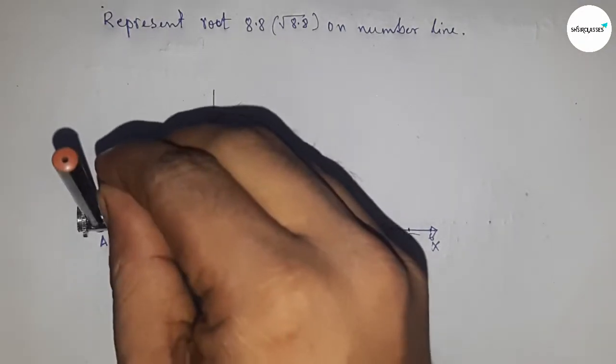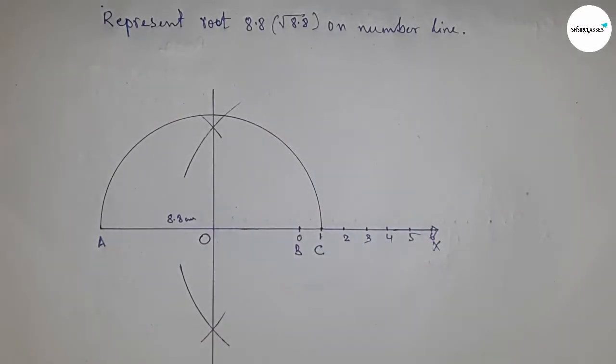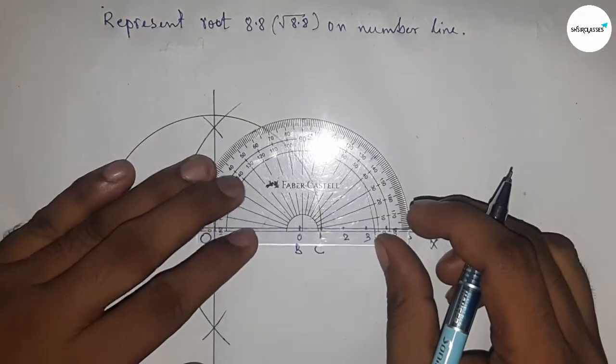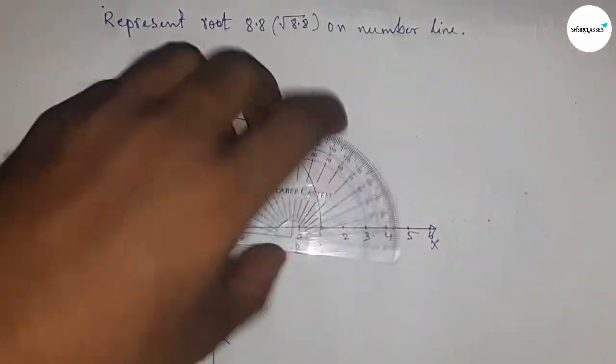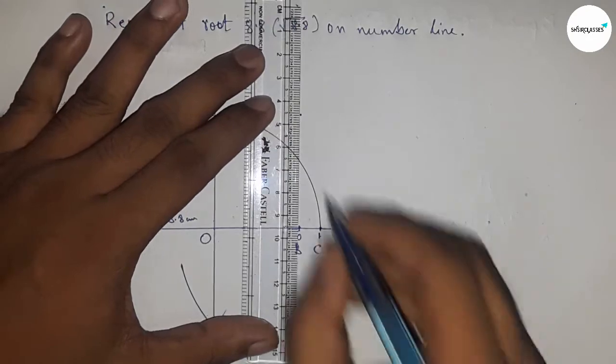Now draw a 90-degree angle at point B using a protractor. Draw the 90-degree angle here. Now join this.